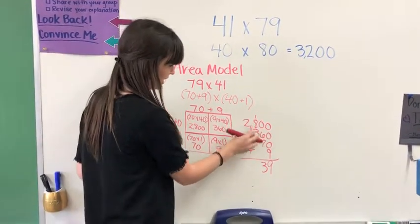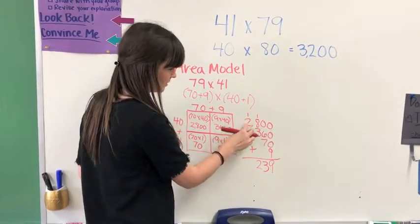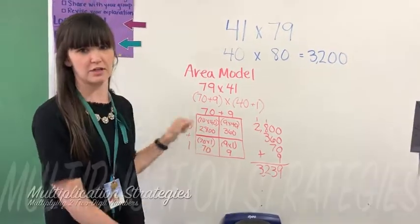1 plus 8 is 9, plus 4 is 12. Put down the 2, trade the 1. 1 plus 2 is 3. Our answer is 3,239.